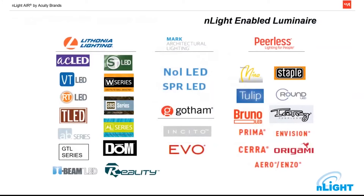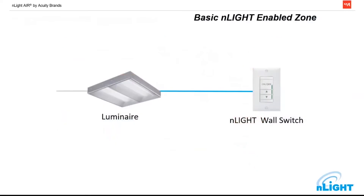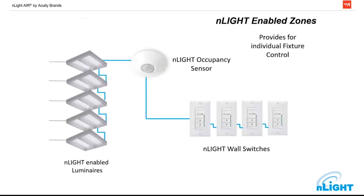Taking a step further is nLight-enabling a fixture, where basically we are integrating all of that control right into the light fixture itself. In a basic nLight-enabled zone, we've removed the power pack. We are bringing power straight to the fixture — no dimming wires, nothing else. Now that fixture is dimmable; it can turn on, off, and dim right from our wall switch. We can add occupancy control, network our fixtures via data chaining on the Cat5, and individually address them. Switch one controls fixtures one and two, switch two controls fixture three, and so on.